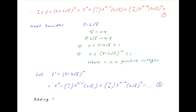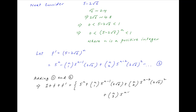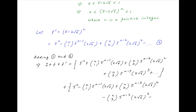Adding Results 1 and 2, we get i + f + f' on the left-hand side equal to [5^n + C(n,1)·5^(n-1)·2√6 + C(n,2)·5^(n-2)·(2√6)² + C(n,3)·5^(n-3)·(2√6)³ + ...] plus [5^n - C(n,1)·5^(n-1)·2√6 + C(n,2)·5^(n-2)·(2√6)² - C(n,3)·5^(n-3)·(2√6)³ + ...].